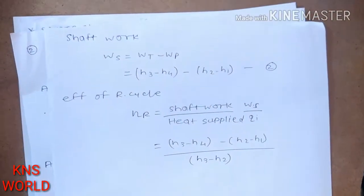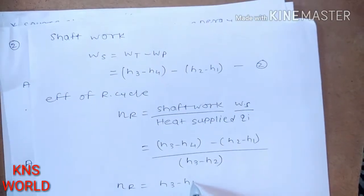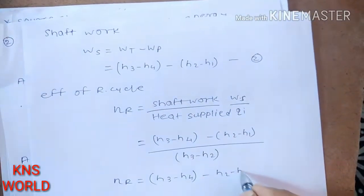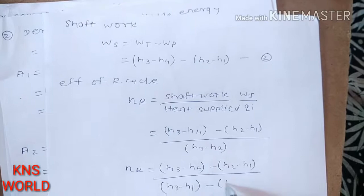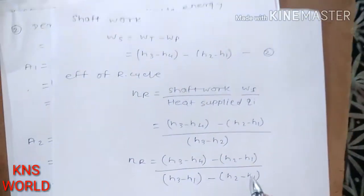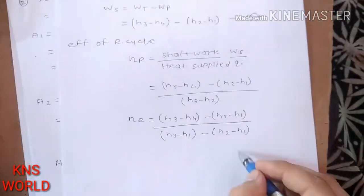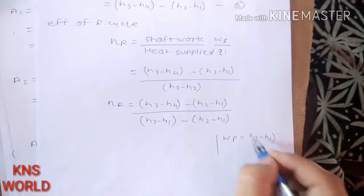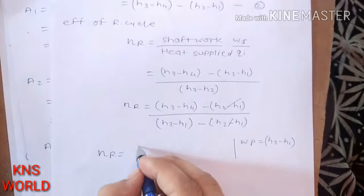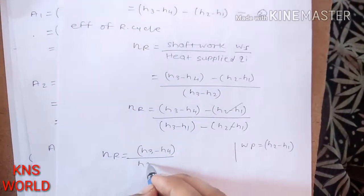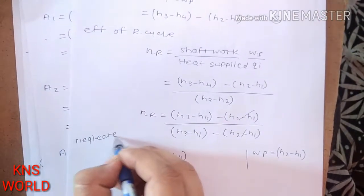The efficiency can also be written as (H3 minus H4) minus (H2 minus H1) divided by (H3 minus H2). If we neglect pump work — that is, WP = H2 minus H1 is dropped — the efficiency simplifies to: η = (H3 minus H4) / (H3 minus H1).